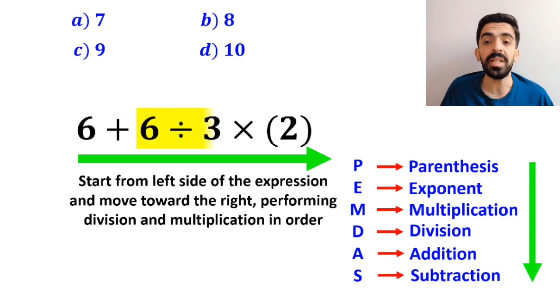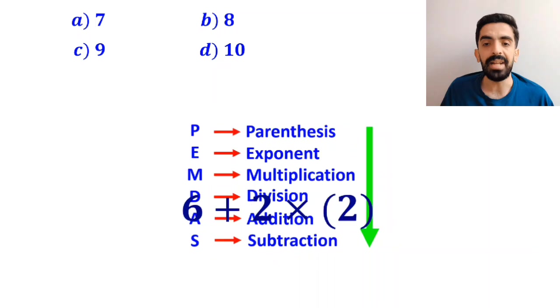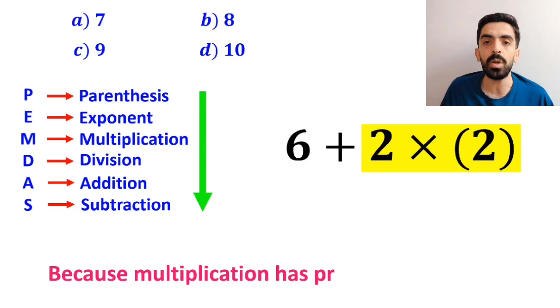So, first we perform the division between 6 and 3, which simplifies the expression to 6 plus 2 times 2. In the next step, it's time for the multiplication between the 2s, because multiplication has priority over addition.